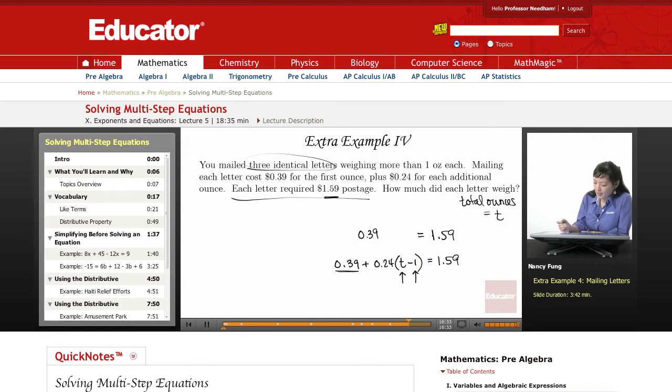All right, now let's go ahead and solve this. I'm going to be distributing the 0.24. So 0.39 is for the first ounce, plus 0.24 for each additional ounce, minus the 0.24 for that ounce that we've already accounted for here.